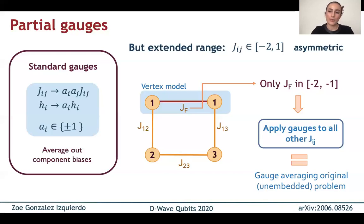Now one problem with this extended range is that it prevents us from using the standard gauge averaging. Gauge averaging is a method by which we average out component biases that might be present in the qubits or the couplers. And we do this by solving the same problem many times, but each time applying a different random transformation to the couplers and fields where they can remain the same or change sign. Now because the extended range is asymmetric, we can't change sign if we're within that asymmetric part.